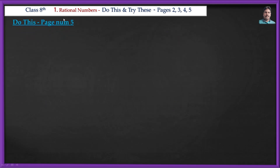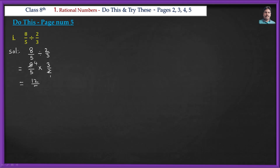Do this: 8/5 ÷ 2/3. Let us solve this problem. Division means we multiply by the reciprocal: 8/5 × 3/2. We cancel 2 from 8 — 2×4=8. So 4×3=12 and 5×1=5. The final answer is 12/5.